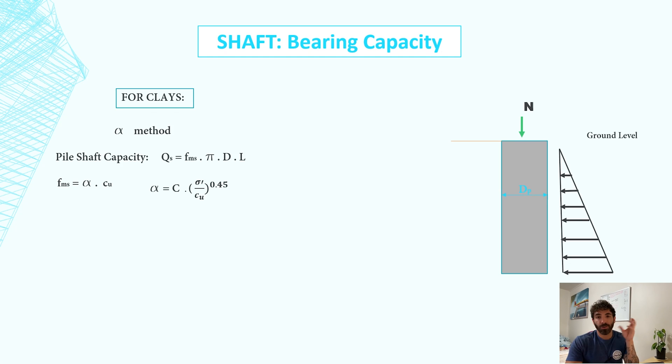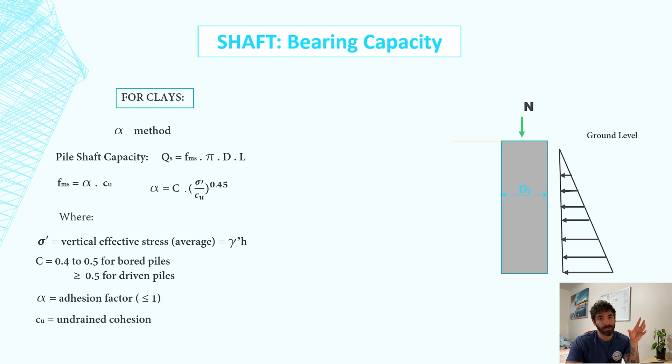α is given by the coefficient times the vertical effective stress divided by the undrained cohesion to the power of 0.45. Notice that α is dependent on the vertical effective stress, which is γ times depth. Therefore, it makes sense that α will increase with the depth. The deeper you go, the more the soil will compress the pile.